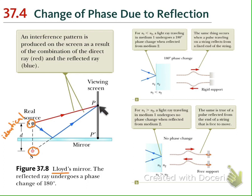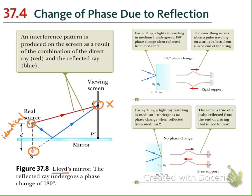So if you go to point P where you have constructive interference from two real sources separated by distance d, you would expect constructive interference here too when using one source and a mirror. But the result is not like that — it is not constructive at point P. So we have to question whether the source from the mirror is truly identical. This physicist Lloyd shows that the light from the real source and its image are not identical — they have something different.